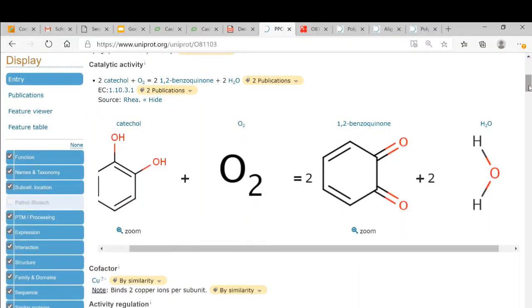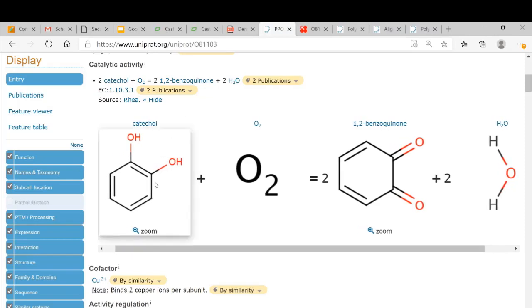Let's have a look at the reaction that can be catalyzed by polyphenol oxidase. Here you see catechol, which is a polyphenolic compound. It has the benzene ring with two hydroxy groups. So 1,2-dihydroxybenzene would be an alternative name for catechol.